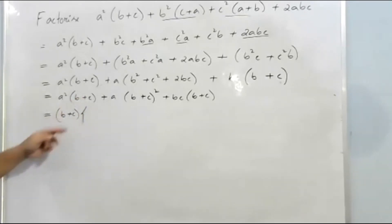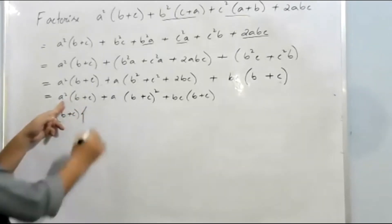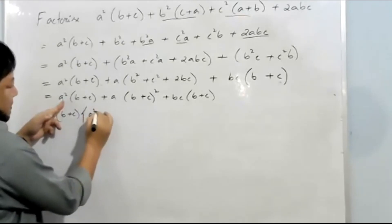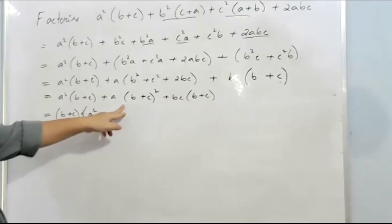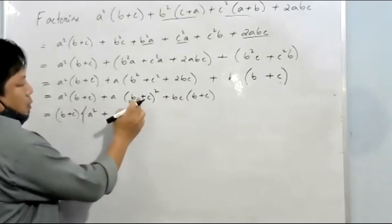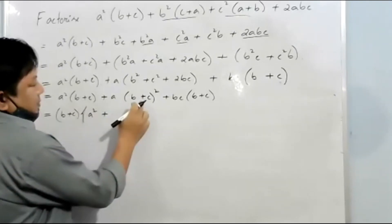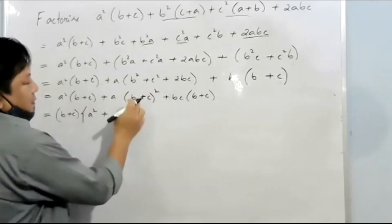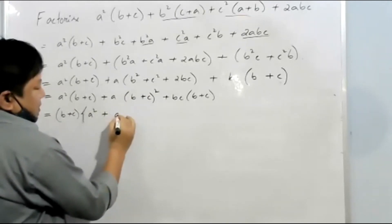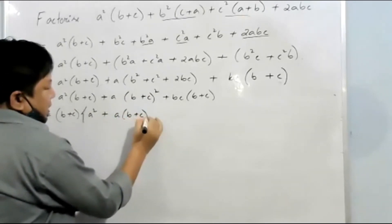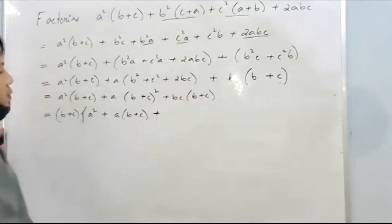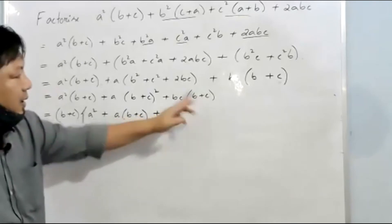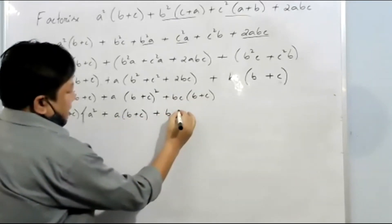If we take out (b + c) from the first term, a² is the remainder. From the second term, taking one (b + c) out leaves a(b + c). From the third term, bc is the remainder.